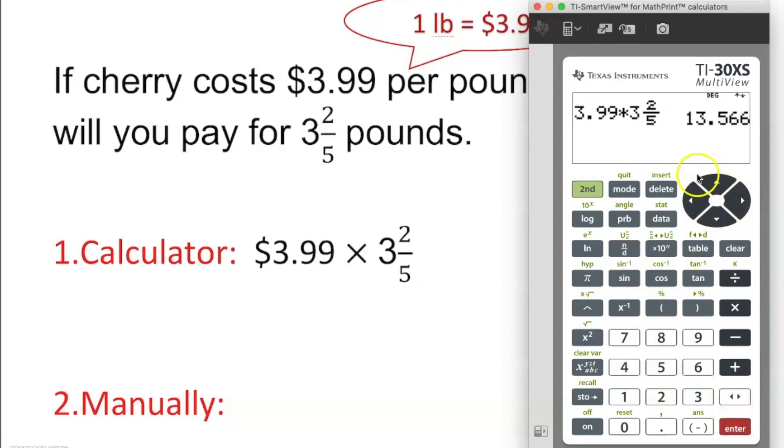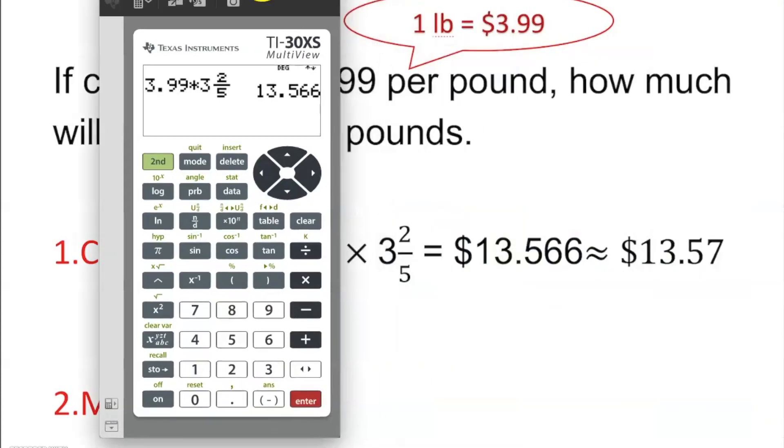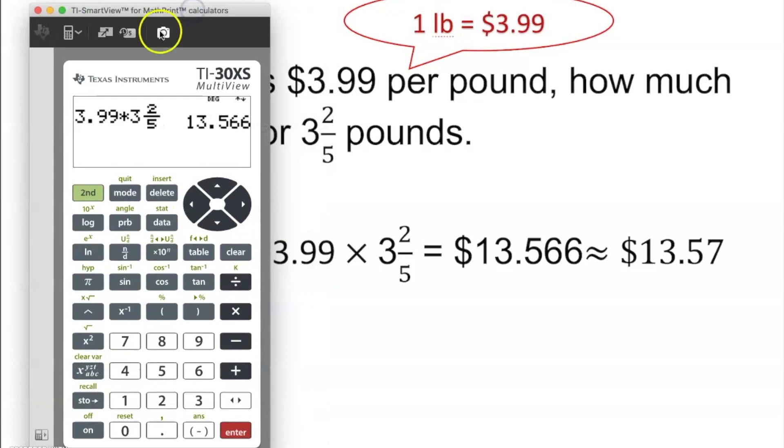And it gives you 13.566. So basically, it's going to give you that much clearly as you see. So, 13.566 is approximately, well, we don't want to say 566 cents, no.